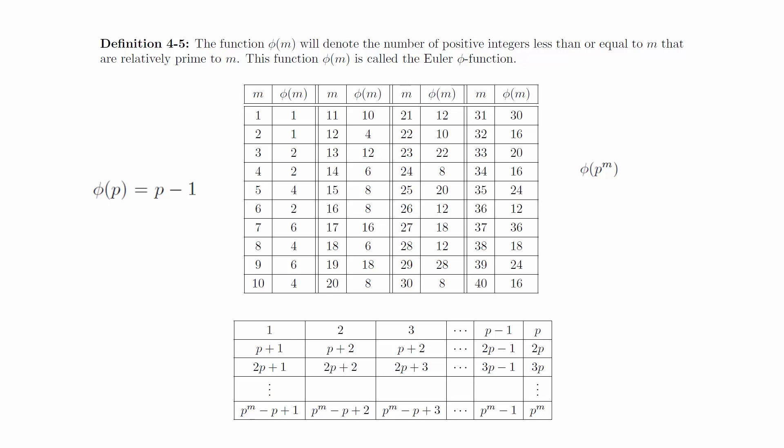Consider writing out the numbers from 1 to p to the m in a grid as shown here. First, notice that this is a grid of values that has p columns and p to the m minus 1 rows.